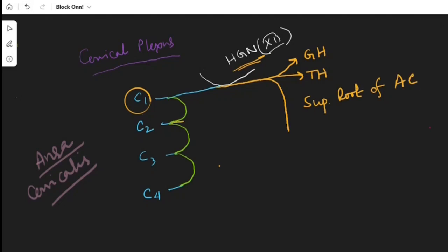The inferior root of ansa cervicalis arises from the C2 and C3 which joins with the superior root to form the ansa cervicalis. From the ansa cervicalis, four branches arise. You can remember it as three.